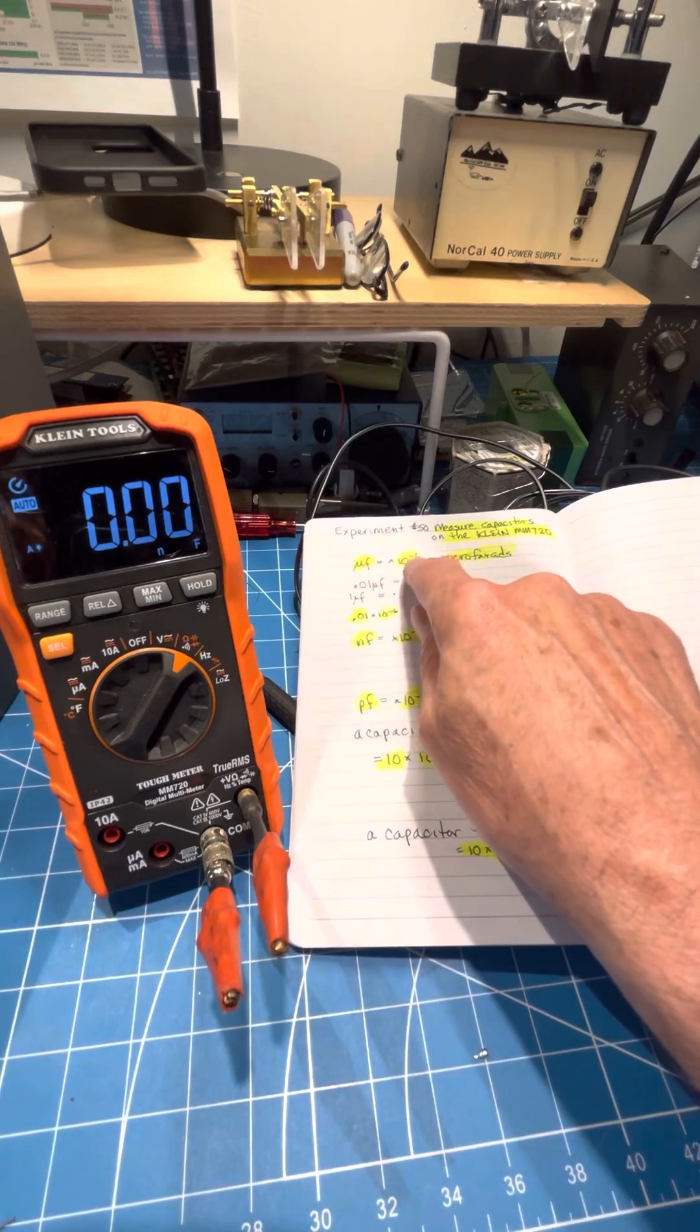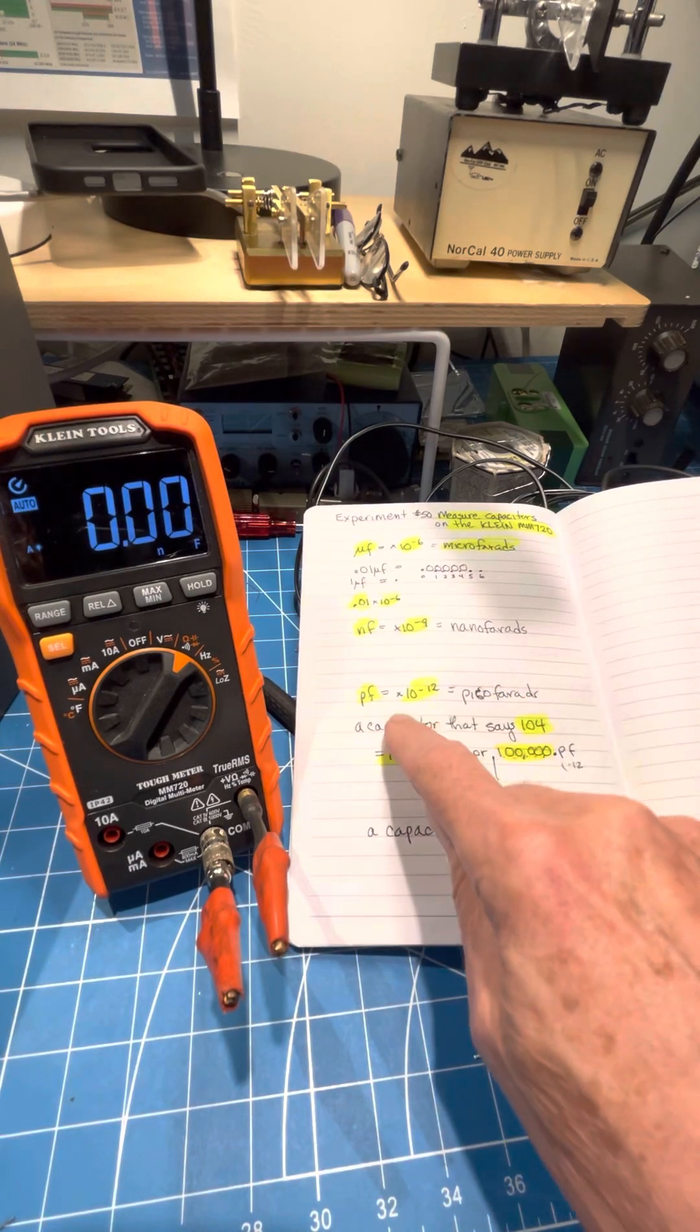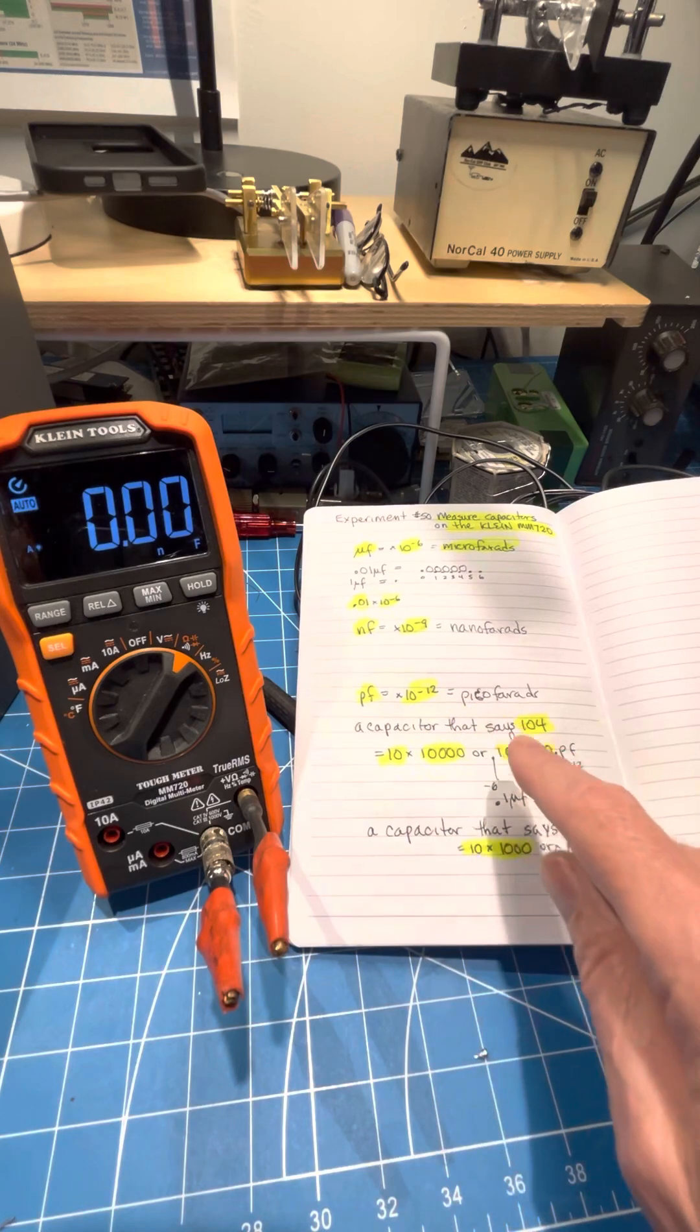So a microfarad is 10 to the minus 6, a nanofarad is 10 to the minus 9, a picofarad is 10 to the minus 12.